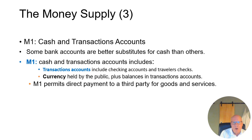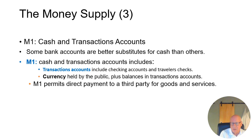M1 includes all your checking account balances, travelers check balances, and currency balances held by the public. Travelers checks have declined quite dramatically. Going back to the 1970s, before computers were powerful enough to provide instant transactions with a debit card at the point of sale — especially for foreign travel, since no foreigner would accept a personal check — travelers checks were significantly more important. Today they're a much more minor part of the total money system, but they're still counted as part of money because they're instantly usable as a medium of exchange. M1 permits direct payment to a third party for goods or services, so it clearly counts as money.